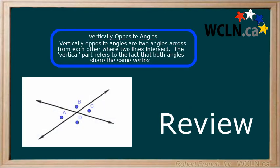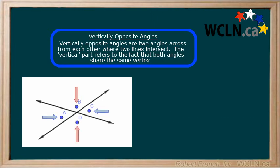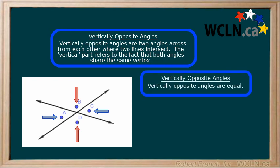In this lesson, you learned about vertically opposite angles. You learned that angles on opposite sides of a vertex created by two intersecting lines are called vertically opposite angles. You also learned that vertically opposite angles are equal.